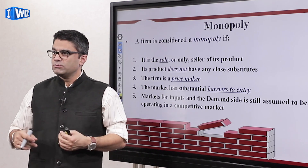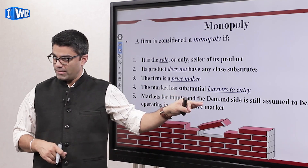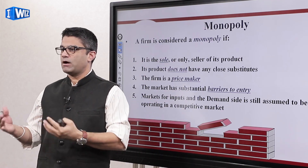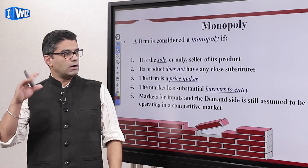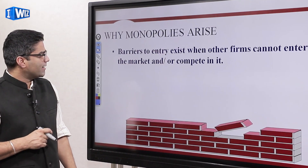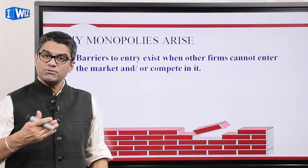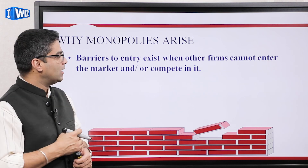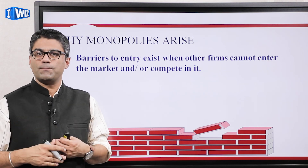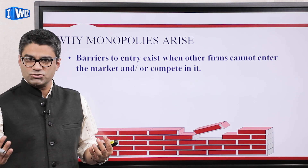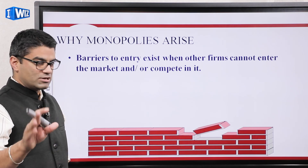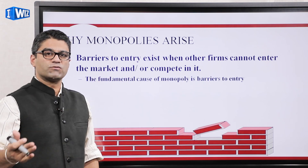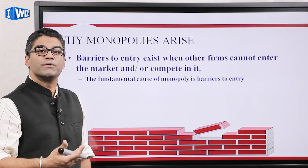The barriers to entry exist — something prevents other firms from entering the market. Sometimes it's government-created monopolies; sometimes it's the fact that a monopolist owns some key resource needed to produce the output. There are several reasons we won't get into in too much detail, but all you need to know is what prevents other firms from entering the market and lets monopolies exist.